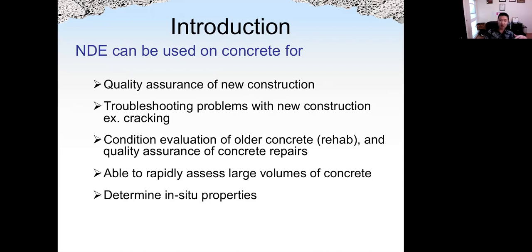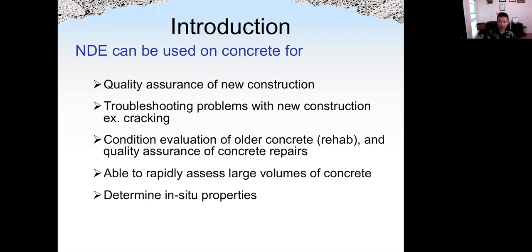NDT can be used for concrete quality assurance of new construction. For example, we want to check the strength development of concrete. We can also check the rebar location, the depth of rebar, and also the bonding between the rebar and concrete. Troubleshooting problems with new construction, such as cracking due to thermal expansion, high temperature, drying shrinkage, or due to loading. Condition evaluation of old concrete, and quality assurance of concrete repairs, such as internal flaw, corrosion, and bonding problems.